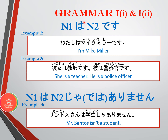The first grammar is the particle wa. As you can see, there's a first noun and a second noun followed by wa — this is the very basic Japanese sentence structure. Wa indicates that the subject is what comes before it. For example: 'I am Mike Miller' — Watashi wa Maiku Mira desu. Similarly, 'She is a teacher' is Kanojo wa kyoshi desu, and 'He is a police officer' is Kare wa keisatsu kan desu.